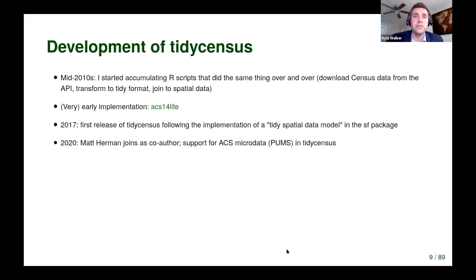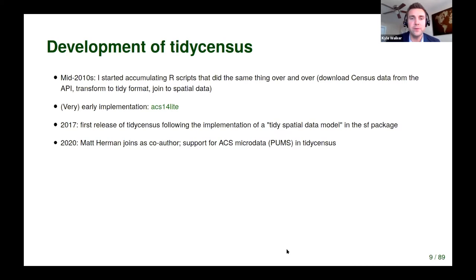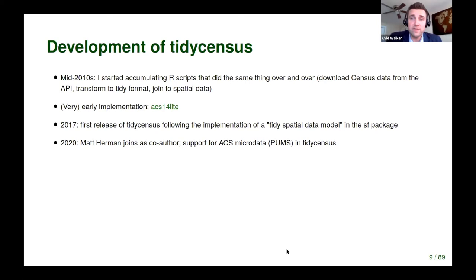There's an adage from David Robinson, prominent in the R community: if you've written the same script three times, write a function for it; if you've written the same function three times, write a package. That's the trajectory I went down. I was repeatedly downloading census data, joining it to spatial data, and transforming to tidy format. I started accumulating functions and dabbling in R package development — you can see a very early implementation, ACS14 Light, a very idiosyncratic approach to working with the 2010-2014 five-year ACS.